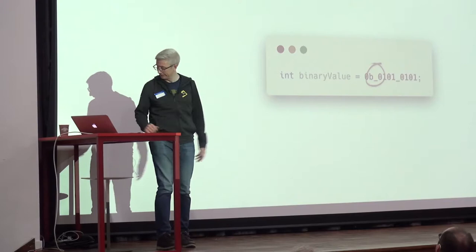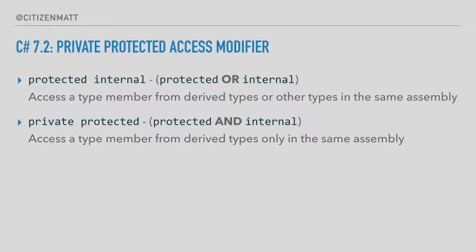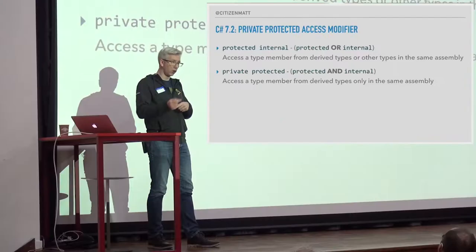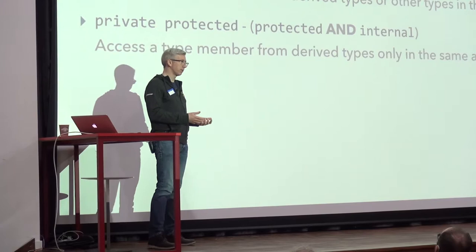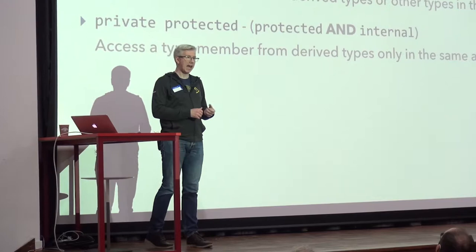We've also got new access modifiers. We've had `protected internal` for ages — that's for accessing a type member from a derived type or another type in the same assembly, so it's protected OR internal. The CLR has also been able to do protected AND internal, and now C# can have it. That means you can mark a type as being accessible only by a derived type within the same assembly. Hands up who needs that? Right.